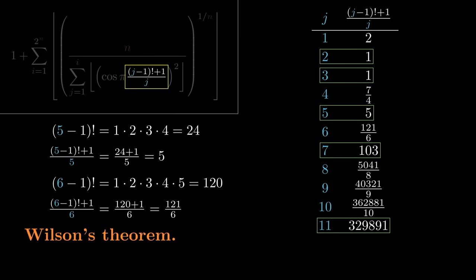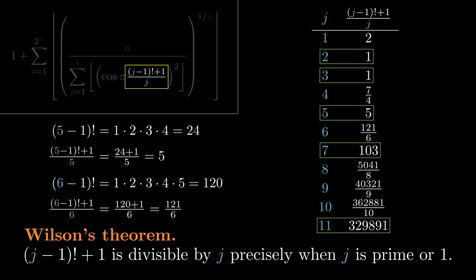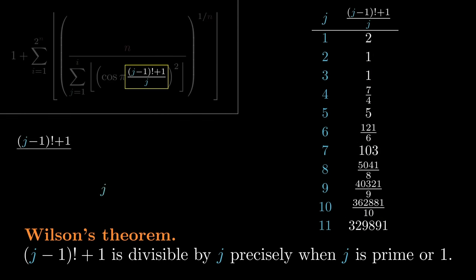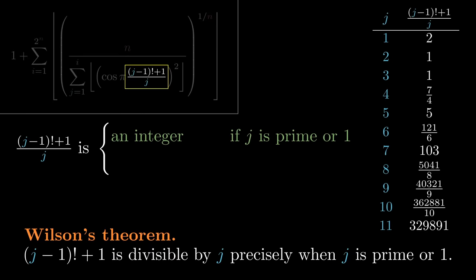There's a theorem called Wilson's theorem, not to be confused with Willans, that says that j minus 1 factorial plus 1 is divisible by j precisely when j is a prime number or j is 1. This implies that when we divide by j, we get an integer when j is prime or 1, and a non-integer when j is composite.